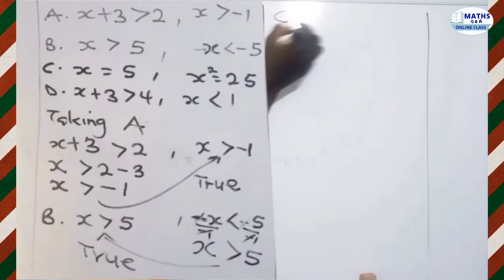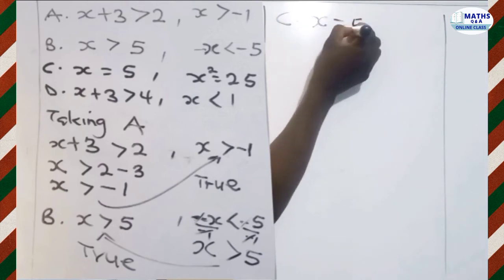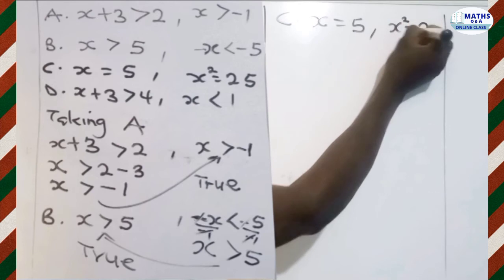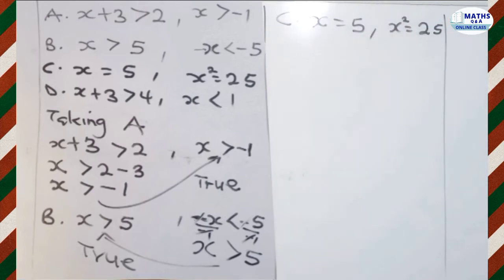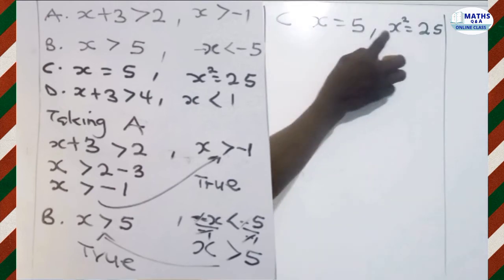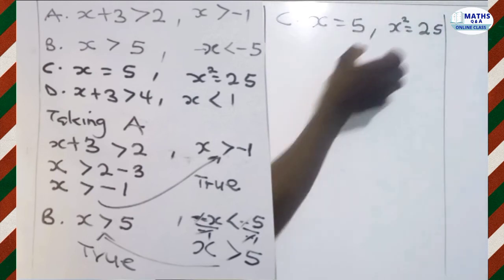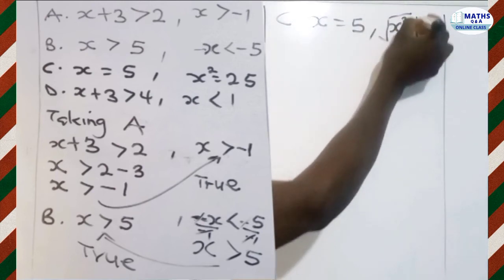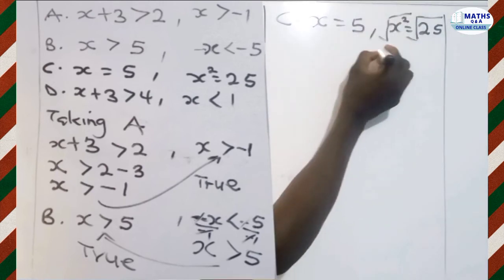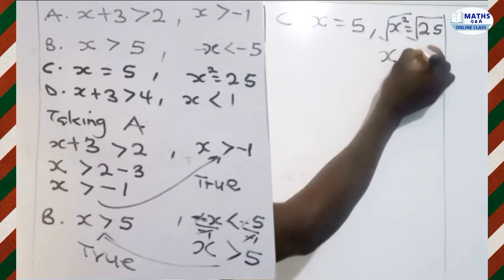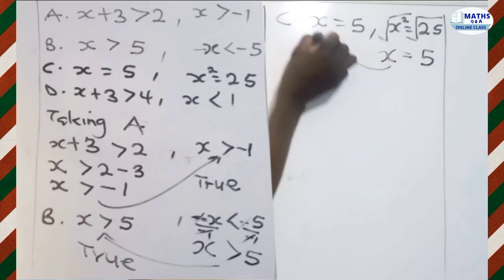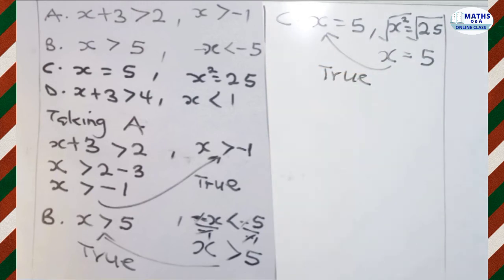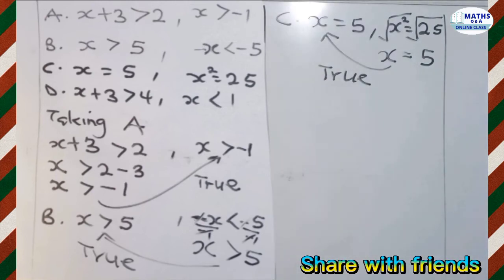Option C: we are given that X equals 5, where X squared equals 25. We make X the subject by finding the square root of both sides. The square root of X squared gives X, and the square root of 25 gives 5. So X equals 5. Comparing with what was given — X equals 5 — this statement is true.